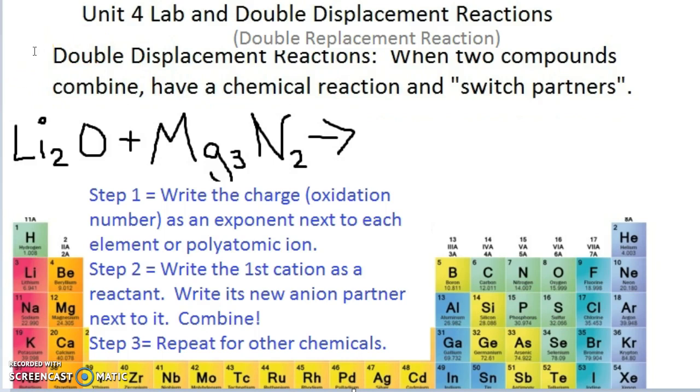So, let's talk about what a double displacement reaction is. And yes, you should be taking notes on this slide. Everything on this slide should be in your notes. Double displacement reaction is when two compounds combine, have a chemical reaction, and switch partners. So, let's do an example while we go through the steps. There are three steps. Step one says write the charge or oxidation number as an exponent next to each element or polyatomic ion. What do I mean by that?